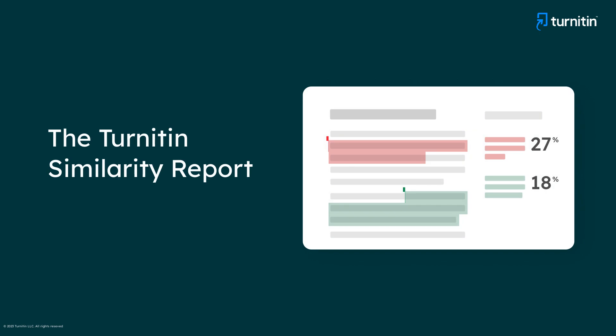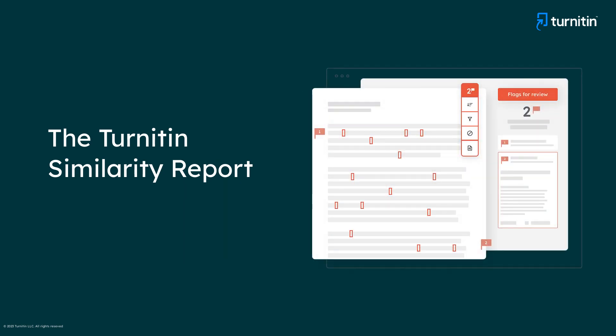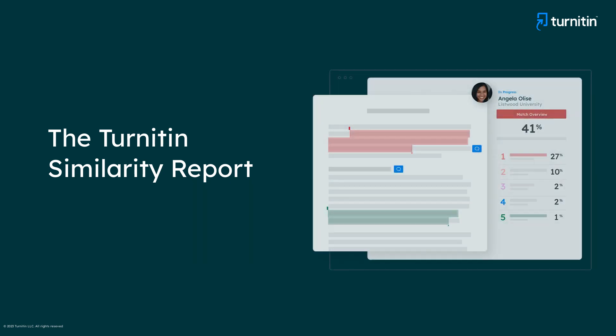What resources are available to help you navigate text similarity? Turnitin's similarity report helps instructors differentiate between text similarity that is expected and intentional attempts to avoid similarity detection, through product features and instructional resources that offer clear guidance for addressing skills gaps and text similarity issues. In this video, we will look at Turnitin's new enhanced similarity report, which has been thoughtfully redesigned with a new intuitive interface and matched categorisation panel, making it easier to interpret and use as a formative assessment tool to strengthen academic writing skills.